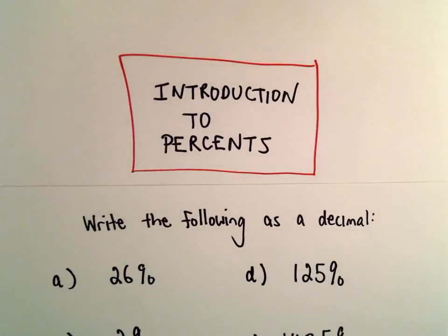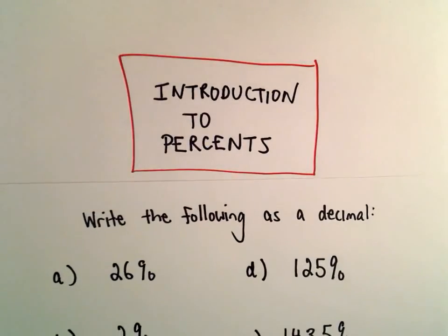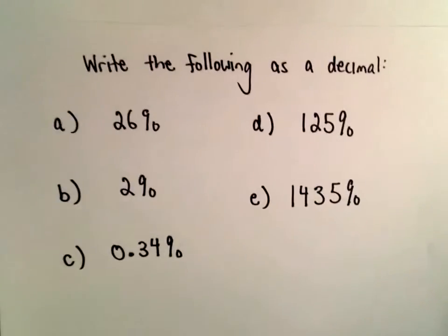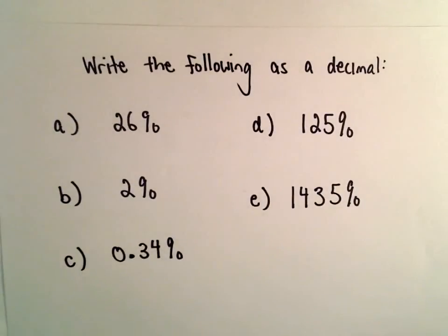In this example, we're going to take five numbers that are written in percent form, and we're going to turn those into decimals. And this is easy as pie if you remember how to do it.